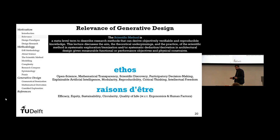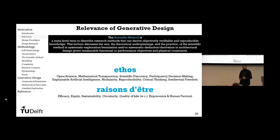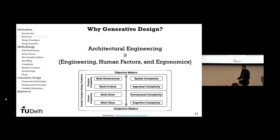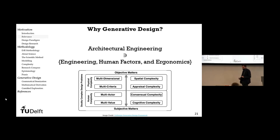The reasons for existence of this work — in a nutshell — are efficacy: making sure design methods are effective and can help us attain our goals; and equity: how can we compare different alternatives and make sure they're equitable for the inhabitants. Also sustainability, circularity, and specific things such as ergonomics and human factors.